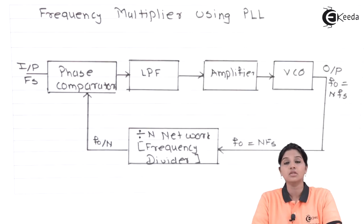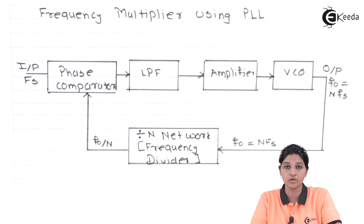PLL is basically a control system that generates an output signal whose frequency is related to the frequency of the input signal. PLL can be used in a variety of applications. A few applications are FM detector, AM detector, FSK demodulator, ASK demodulator, and frequency multiplier and division.